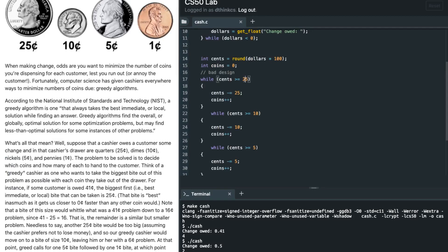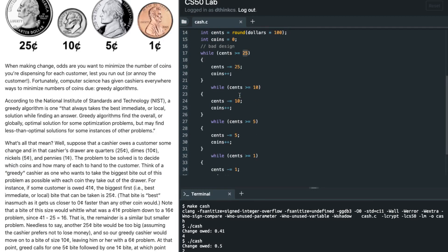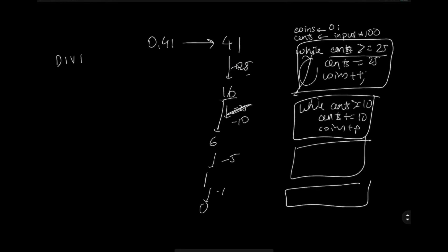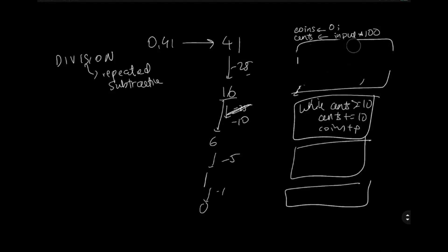This is bad design due to copy-pasting. We can improve it: instead of subtracting the denomination value repeatedly, think about what repeated subtraction actually is — division is repeated subtraction. So instead of a while loop subtracting 25, we can use the mod operator. Saying cents %= 25 divides 41 by 25 and gives us the remainder as the updated value of cents.